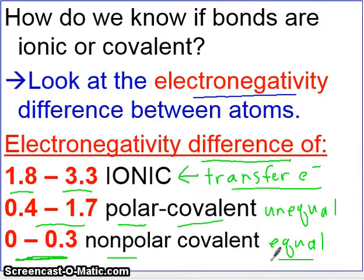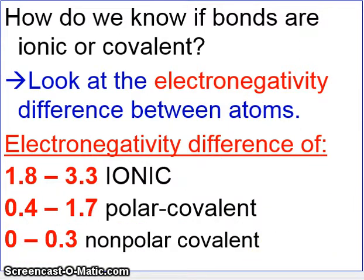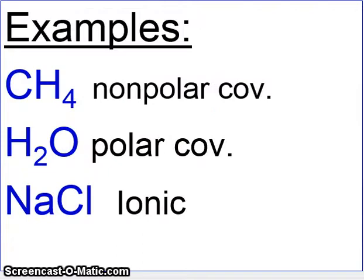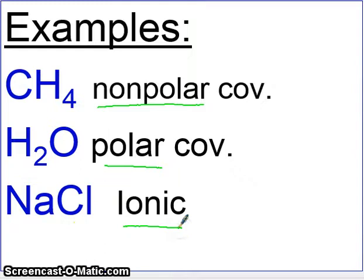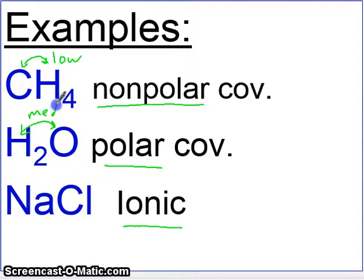The examples we've been working with: CH4 is famously a nonpolar covalent compound; water is famously a polar covalent compound; and sodium chloride, table salt, is ionic. Looking at these elements, CH4 has a really tiny electronegativity difference, water has a medium difference, and NaCl has a very high electronegativity difference — which is why they're nonpolar, polar, and ionic, respectively.